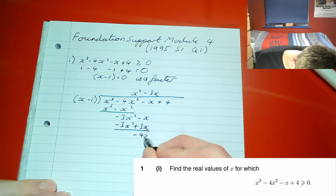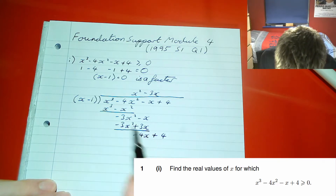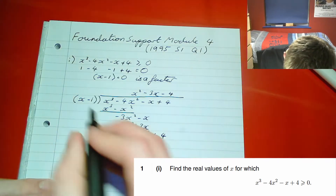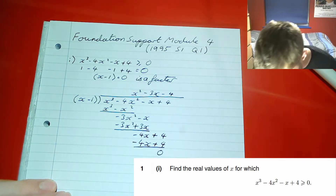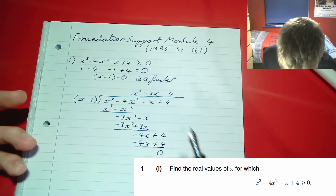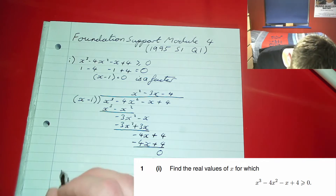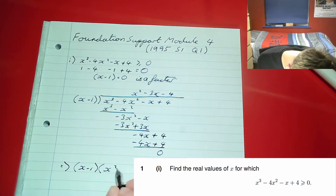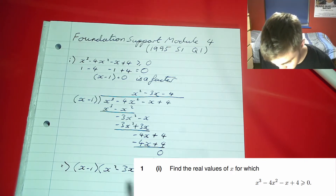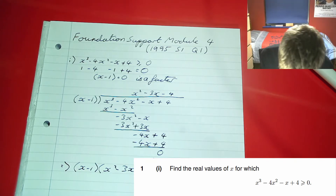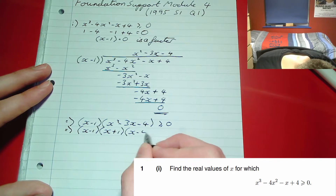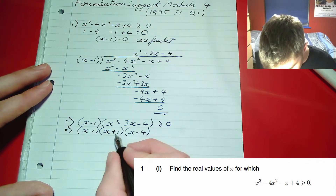Continuing the division: we get negative 3x squared, multiply negative 3x by (x minus 1) to get negative 3x squared plus 3x, subtract to get negative 4x plus 4. That's minus four times (x minus 1), so we get minus 4, and multiplying gives minus 4x plus 4, which cancels to zero — confirming (x minus 1) is a factor with no remainder. So we now have (x minus 1)(x squared minus 3x minus 4) ≥ 0. Factoring the quadratic, we need two numbers that multiply to minus 4 and add to minus 3: that's plus 1 and minus 4. So we get (x minus 1)(x plus 1)(x minus 4).